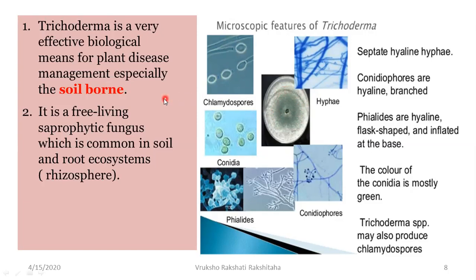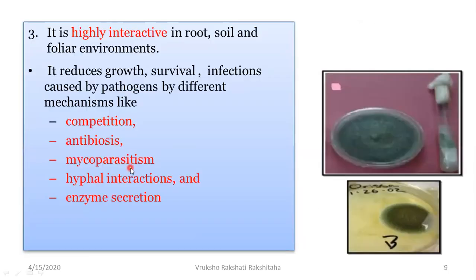Trichoderma is a very effective biological means for plant disease management, especially for soil-borne diseases. It is a free-living and saprophytic fungus, common in the soil — it is a soil-inhabiting fungus. Especially in the soil, it is found in the root ecosystem, that is the immediate zone surrounding the roots, called the rhizosphere. Trichoderma is highly interactive in root and soil environments and also in the foliar environment — the zone surrounding the leaves, called the phyllophere.